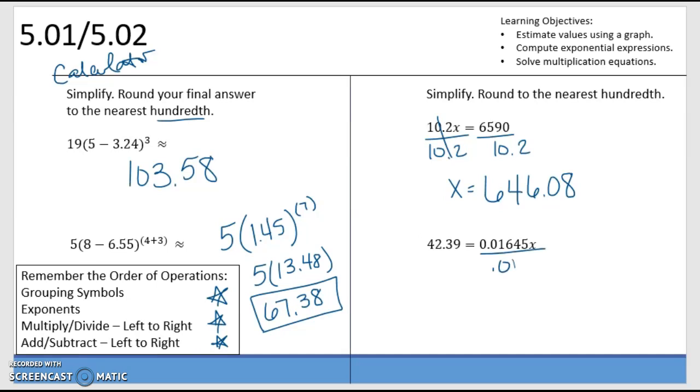Same thing here. 0.01645. So, this number is going to be bigger because I'm dividing by a decimal. So, x is 2576.9.